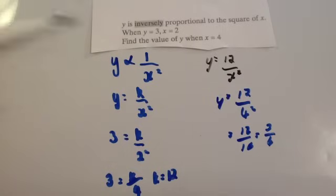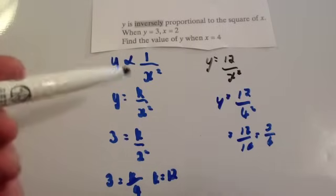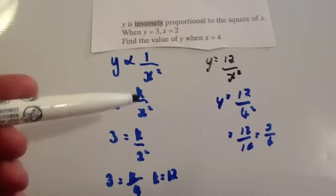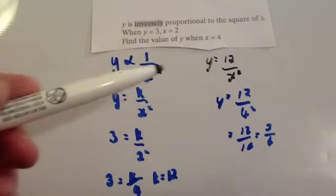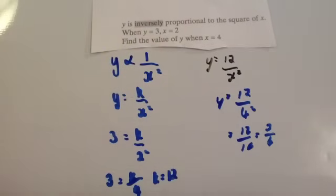So, it's just like direct proportion. Make sure you've watched that video first. The only thing is you're putting K on the numerator and whatever is inversely proportional to on the denominator, and you just solve like before.